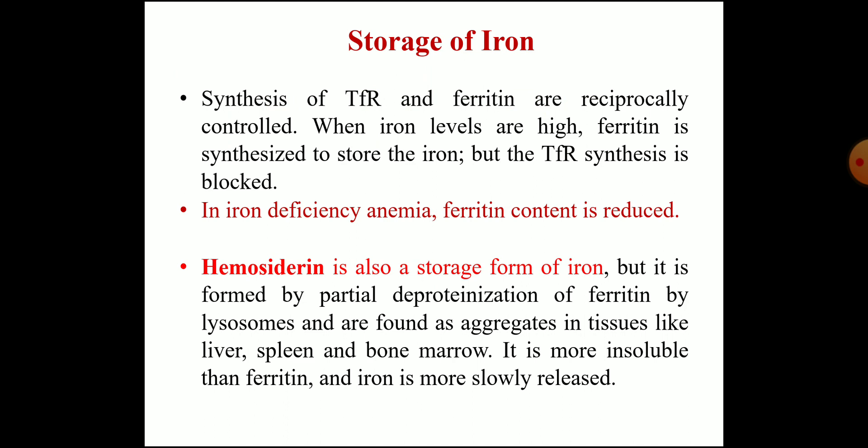So, for iron metabolism, you mainly need to know the absorption, and sometimes sources can also be asked — vegetarian and non-vegetarian. The recommended daily allowance is 20 mg per day. Draw the diagram and explain the method of absorption. The transport form of iron is transferrin and the storage form is ferritin. Thank you.